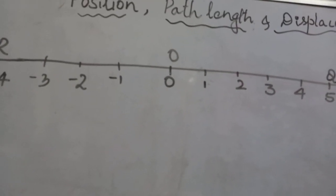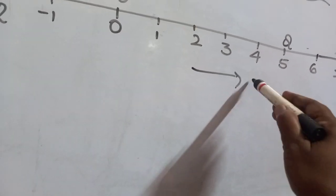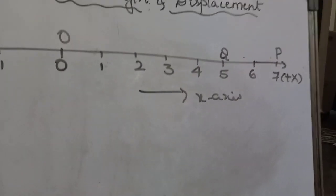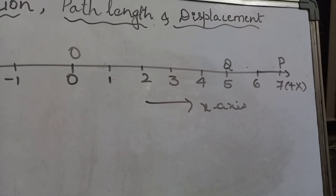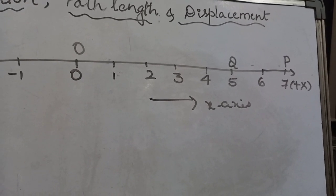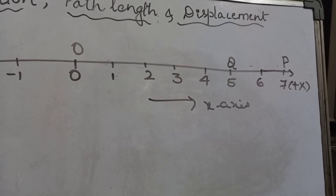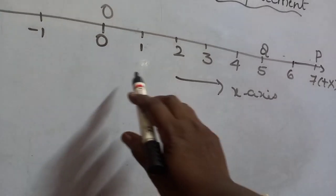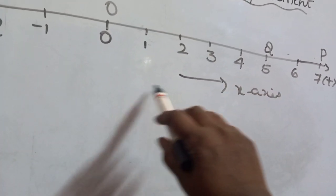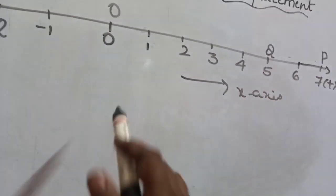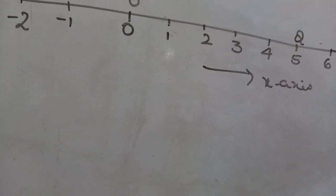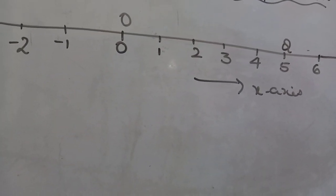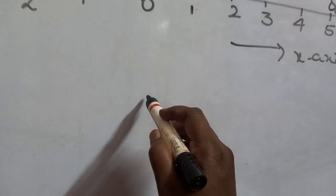Now, if we consider an object moving along a straight line, say along the x-axis, the position of the object is measured with reference to a conveniently chosen origin — how far the object is along the positive or negative axis is taken from a reference point.